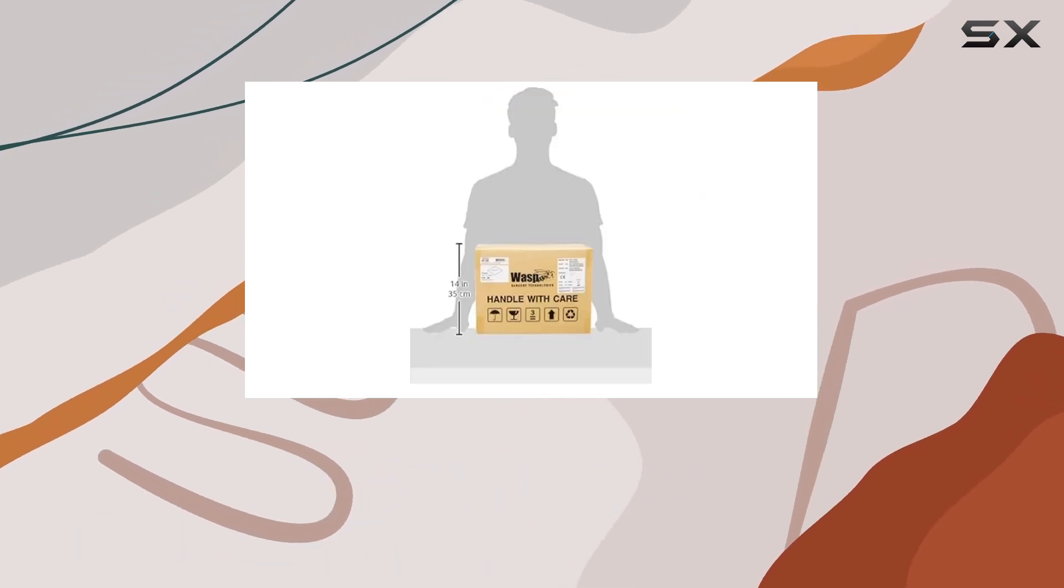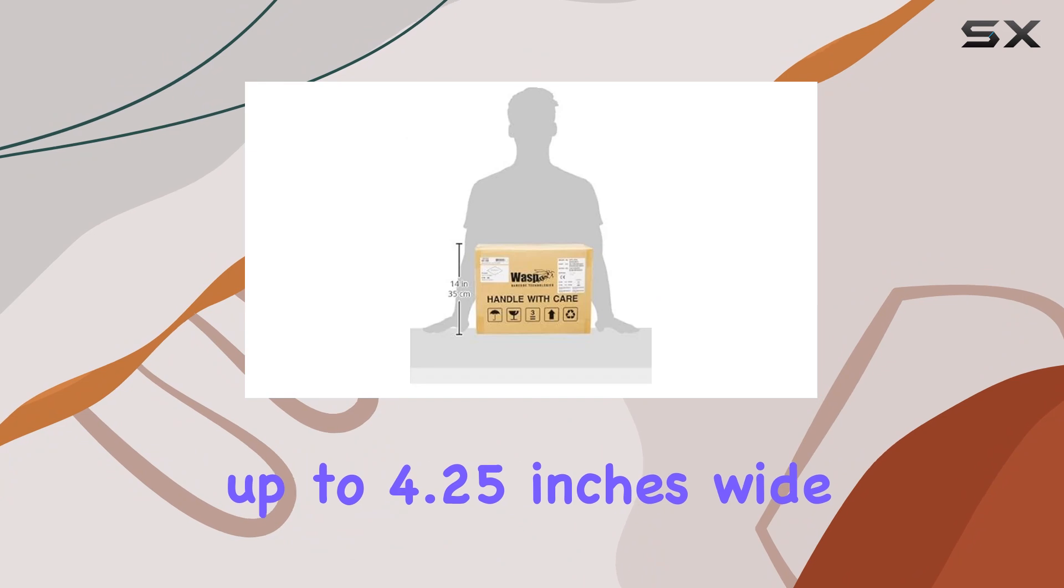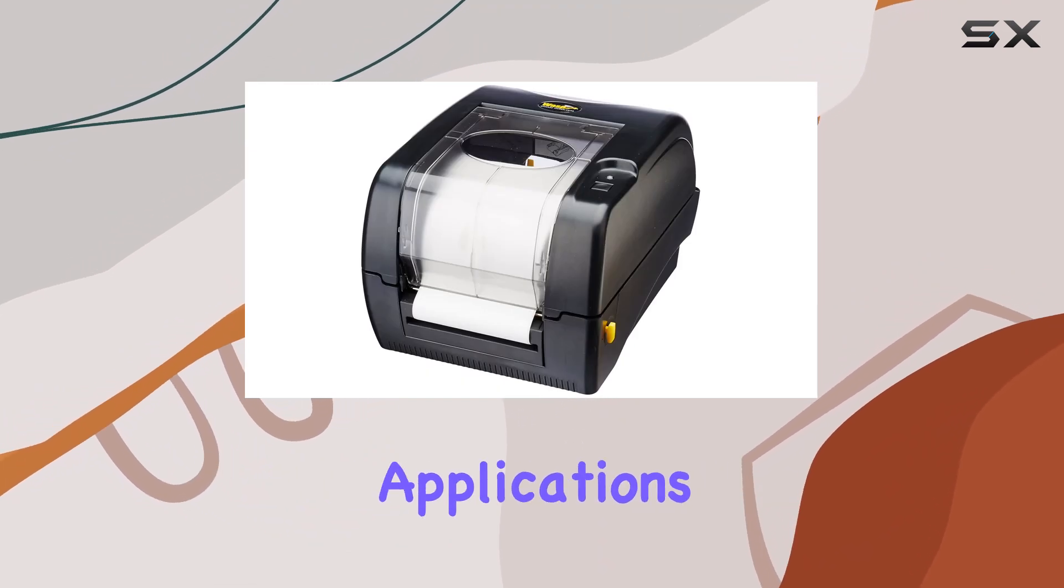The WPL305 can print labels or other media up to 4.25 inches wide, making it versatile for various applications from shipping labels to barcode tags.